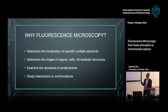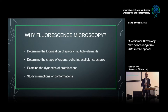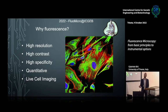We can determine the shape of organs, cells, and intracellular structures. We will see later on also ions, and we have several different types of probes. Moreover, with fluorescence microscopy you can work also in live samples, so you can examine the dynamics of cells, proteins, and subcellular structures. We can also study interactions and different conformations in our sample. The main reason we want to go to fluorescence is that it allows us to achieve high resolution, but mainly the key point is that we have high contrast and high specificity.